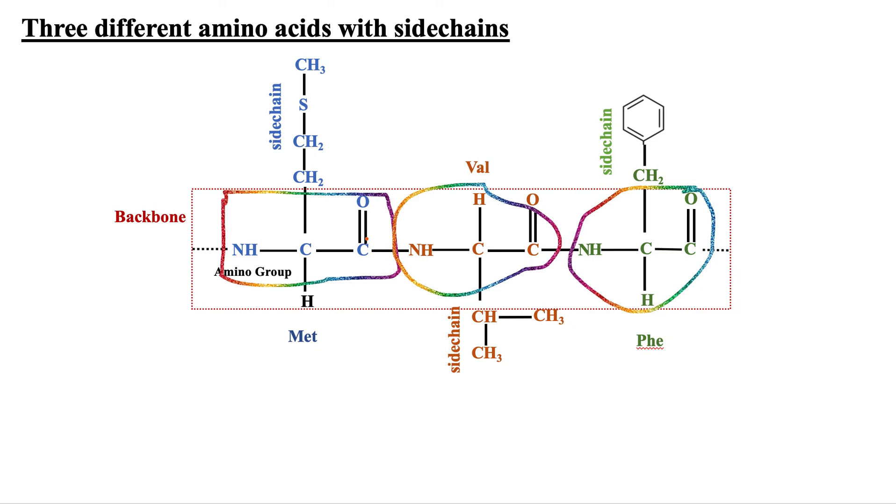The backbone stays the same, which is the area inside the box. The side chains, however, vary. You can see that methionine has an R group which is quite bigger than the R group of valine, and similarly phenylalanine has a side chain like that.